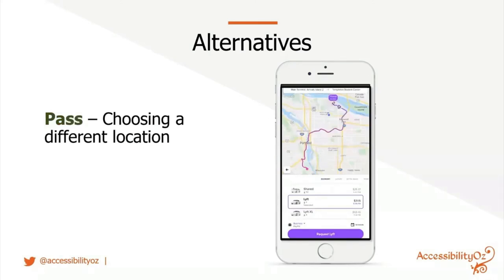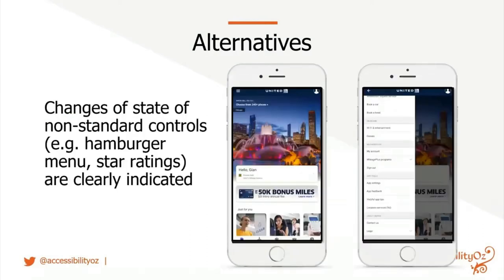Here's a pass example: Lyft in Portland. I'm located in northeast Portland, but I can set Lyft to pick me up from a different location — really important for carers setting up transport for others. Also, changes of state of non-standard controls such as hamburger menus and star ratings must be clearly indicated. On the United app, the hamburger menu shows "open menu" when closed; when open it becomes a back arrow with alt text "close menu" — correctly indicating the changed state.